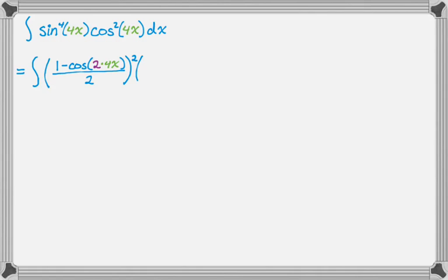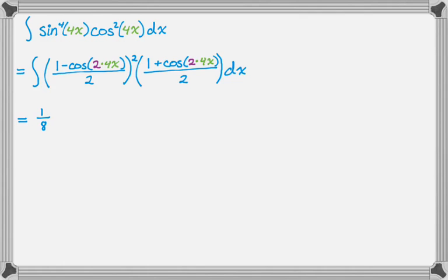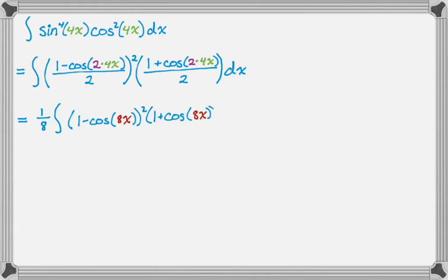We do the same for cosine squared: cos²(4x) becomes (1 + cos(8x)) / 2, then there's a dx. We can factor out 1/8 — because we have (1/2)² from the first fraction and 1/2 from the second. So we have (1/8)·∫(1 − cos(8x))²·(1 + cos(8x)) dx. I'm just rewriting it at this point; I haven't actually done any calculus yet.